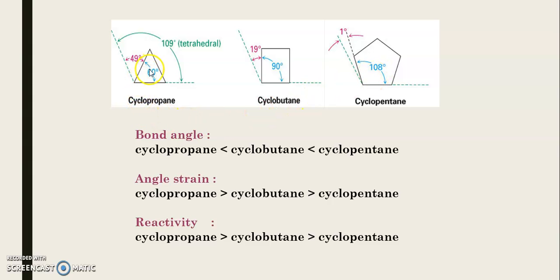For the bond angles, the largest is cyclopentane, followed by cyclobutane, and the smallest is cyclopropane. Angle strain will be the opposite - if the bond angle is small, the angle strain will be large. So reactivity follows the angle strain because increased angle strain value increases the reactivity of cyclic compounds. This is why cyclopropane is highly reactive compared to cyclopentane.